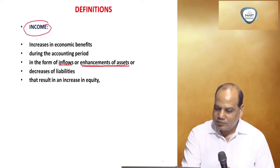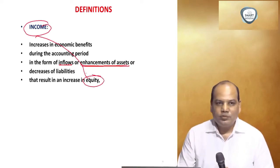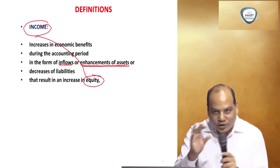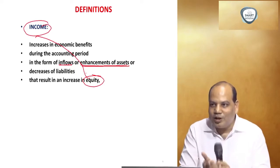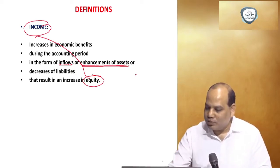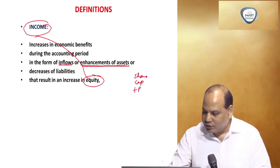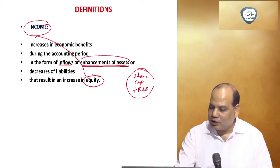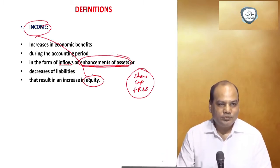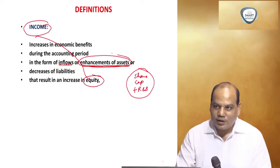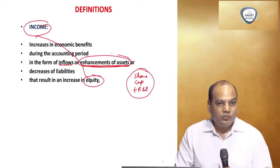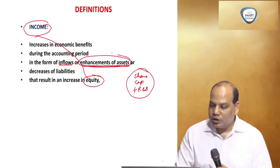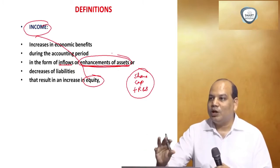Revaluation of a fixed asset upward is also an income. Profit on sale of a fixed asset is also an income. Profit on sale of investment is also an income. However, income may be revenue or income may not be revenue. Income that arises in the course of an entity's ordinary activities is revenue.